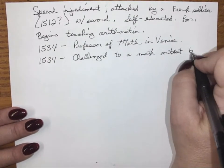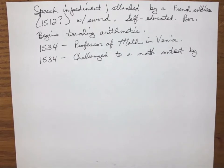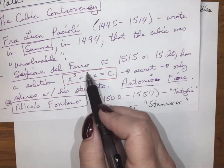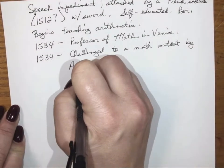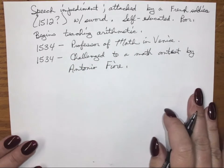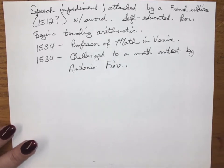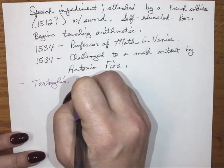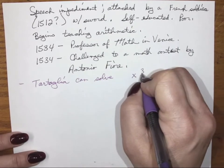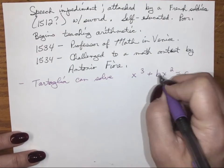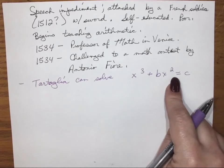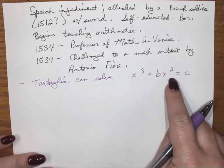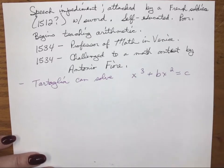The challenge comes from Antonio Fiore — the student of del Ferro who came up with the other solution. Fiore is thinking: I know how to solve this one type of problem, so I'm going to beat him in this public competition. But unbeknownst to Fiore, Tartaglia can already solve cubics in the form x³ + bx² = c. He's missing the linear term — our cx term in today's notation of ax³ + bx² + cx + d = 0.